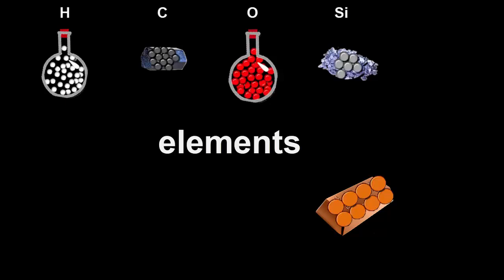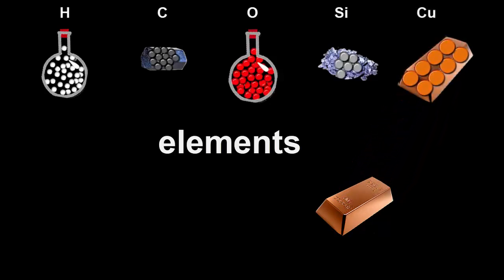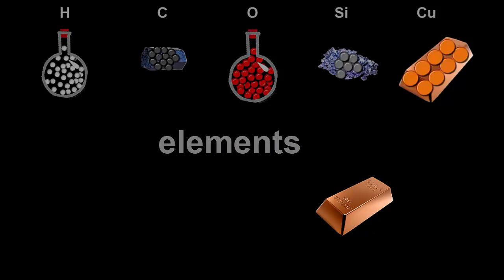Copper is the only one of the original substances that is already as simple as it can get. When we pull copper's atoms apart and put them back together again, we make copper again. Copper is already an element because it's made of only one kind of atom.